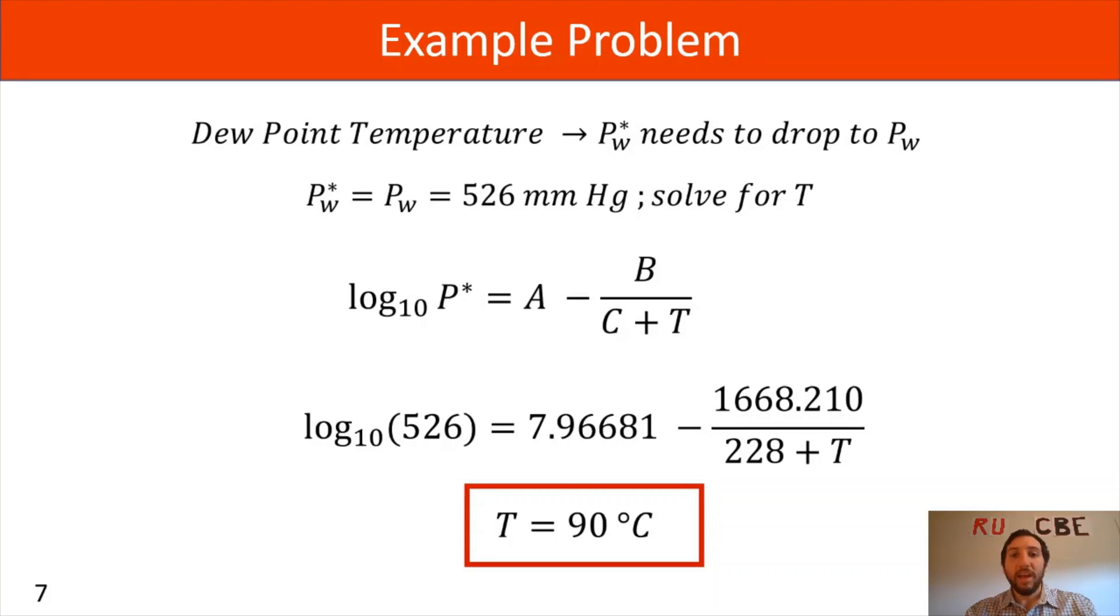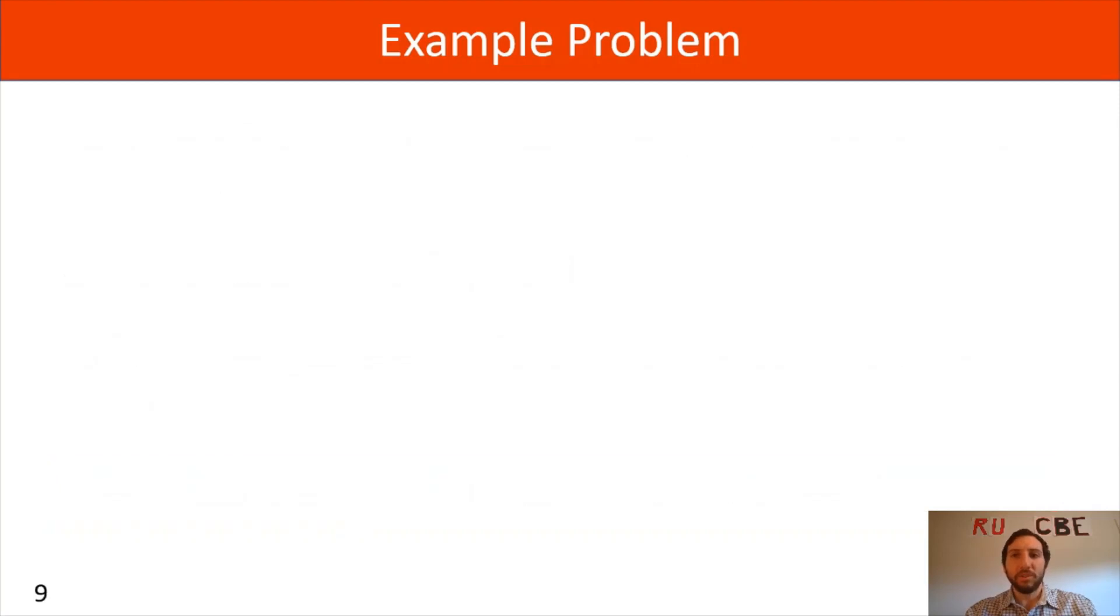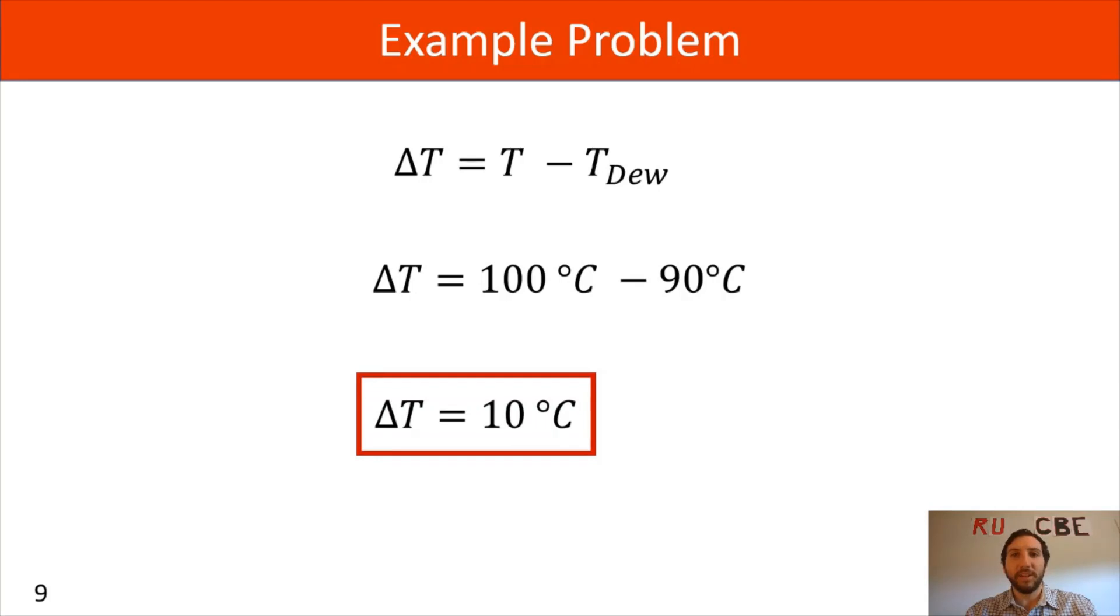Now that we've calculated our dew point temperature, we can move on and figure out what the degrees of superheat for the system are. Our delta T, or degrees of superheat, is going to equal our temperature minus our dew point temperature. For us, that's 100 degrees Celsius minus 90 degrees Celsius, giving us 10 degrees of superheat.